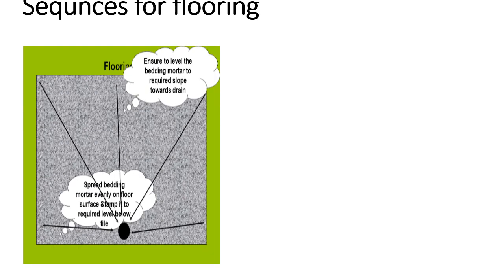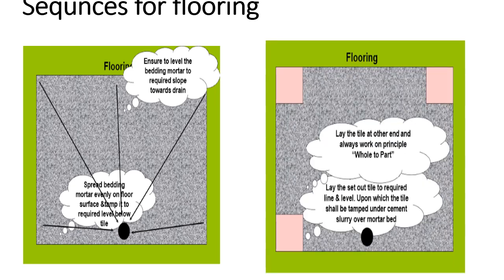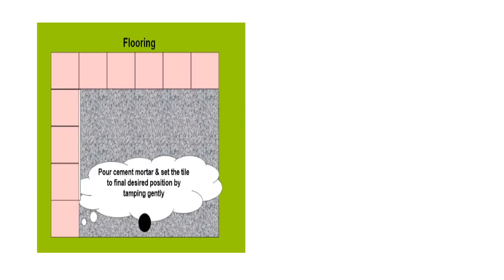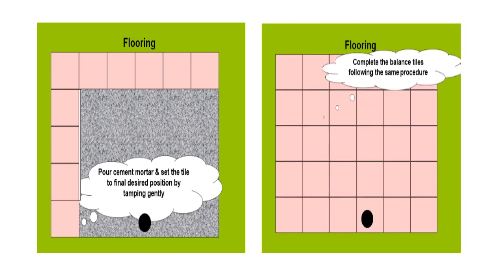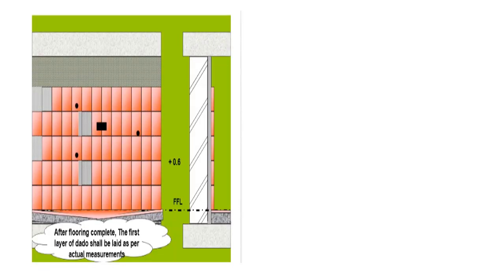Sequences for flooring: ensure to level the bedding mortar to the required slopes towards the drain. Spread mortar evenly on the floor surface and tamp it to the required level before fixing the tiles. Lay the tile at the other end and always work on a principal grid. Lay the set-out tiles to the required line and level, upon which the tile should be tamped under cement slurry over the mortar bed. Set the tile to the final desired position by tamping it gently. Complete the balance side tiles following the same procedures. After flooring, complete the first layer of the dado, which shall be laid as per the actual measurements.